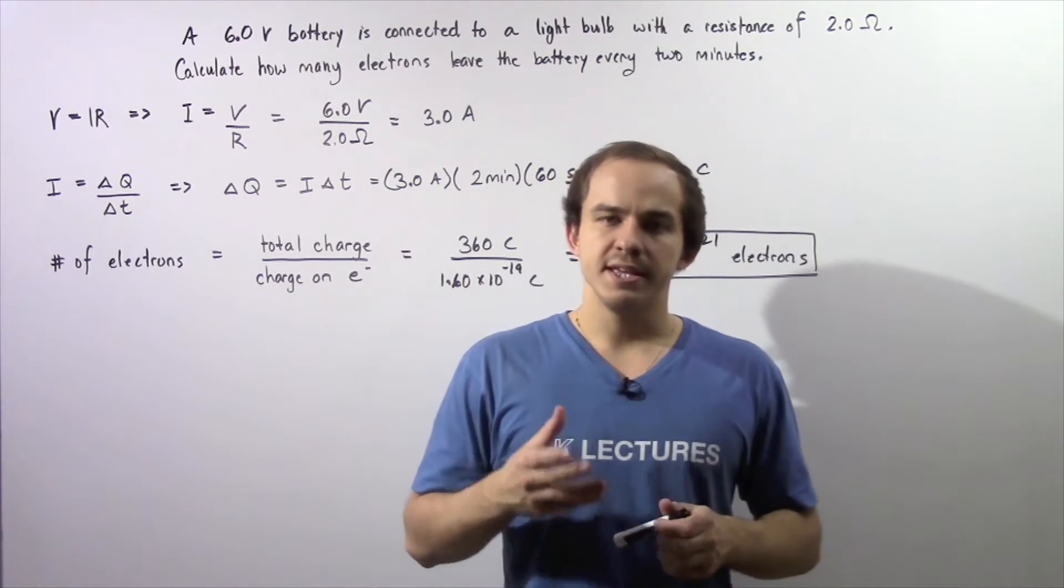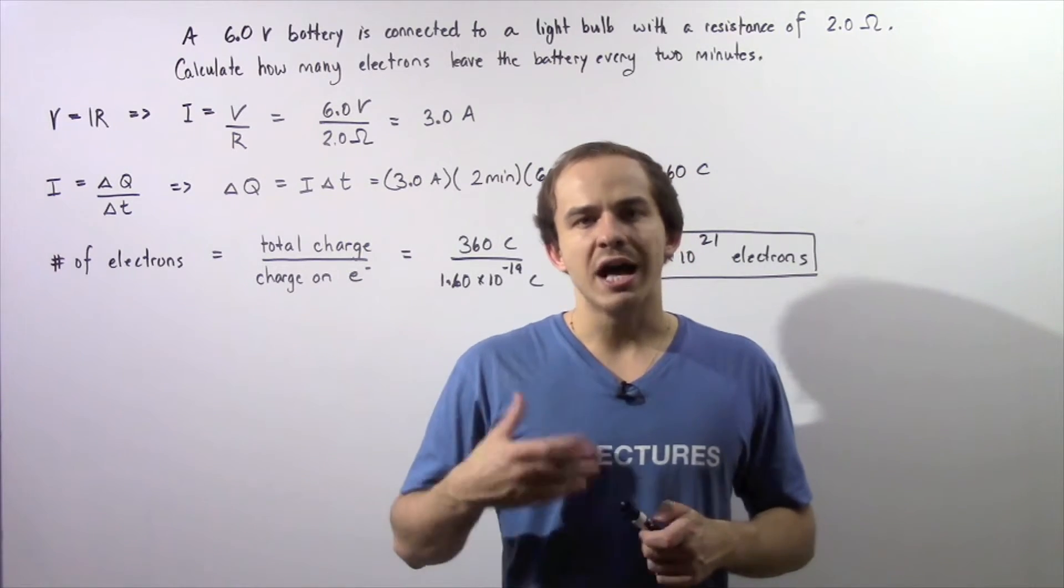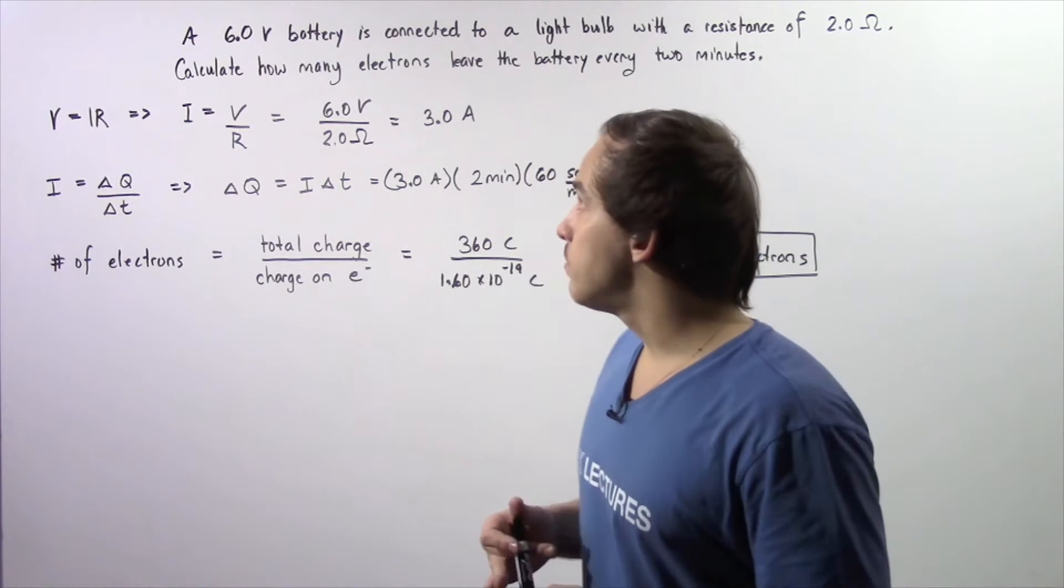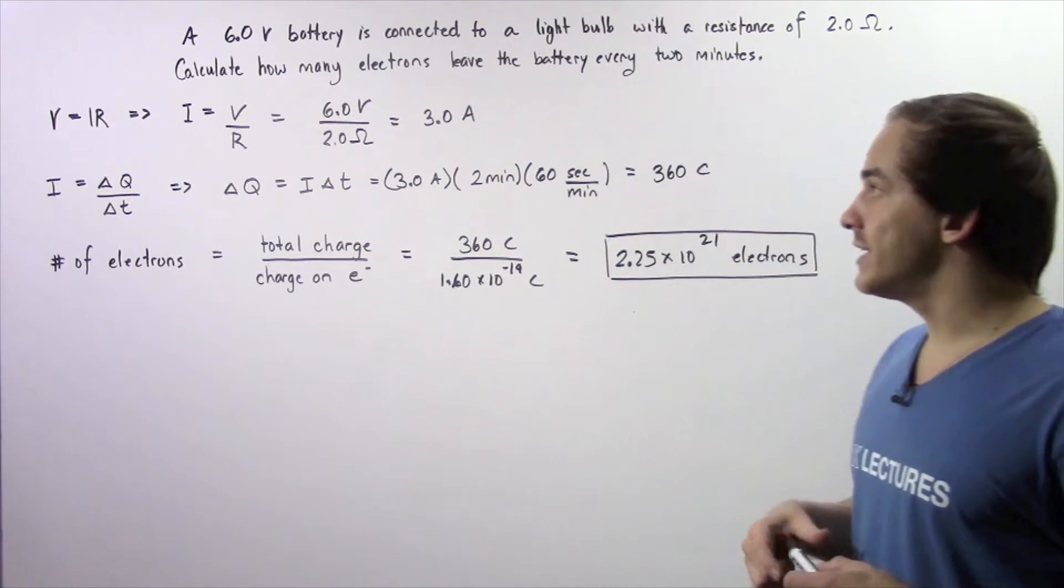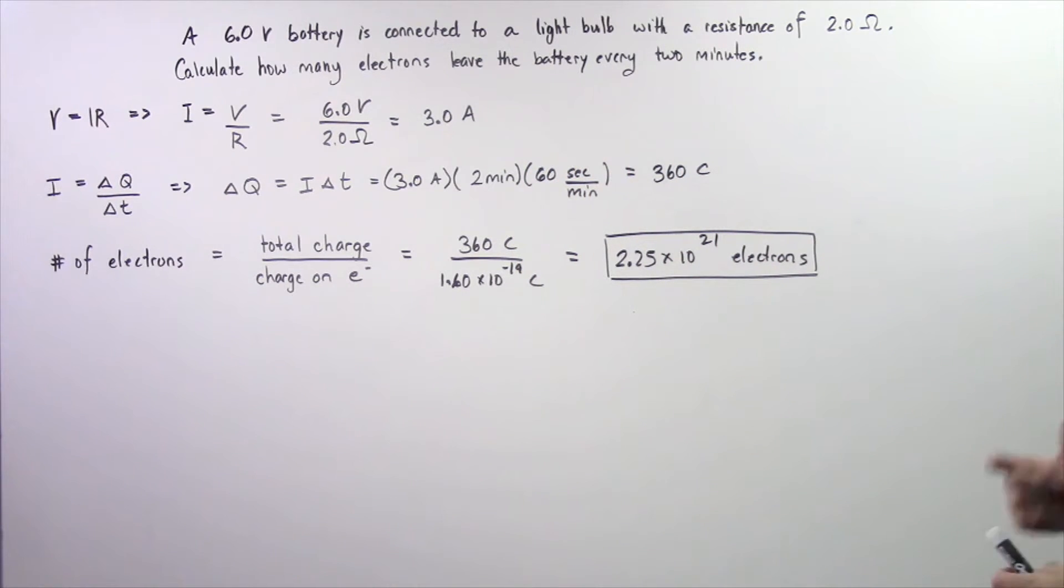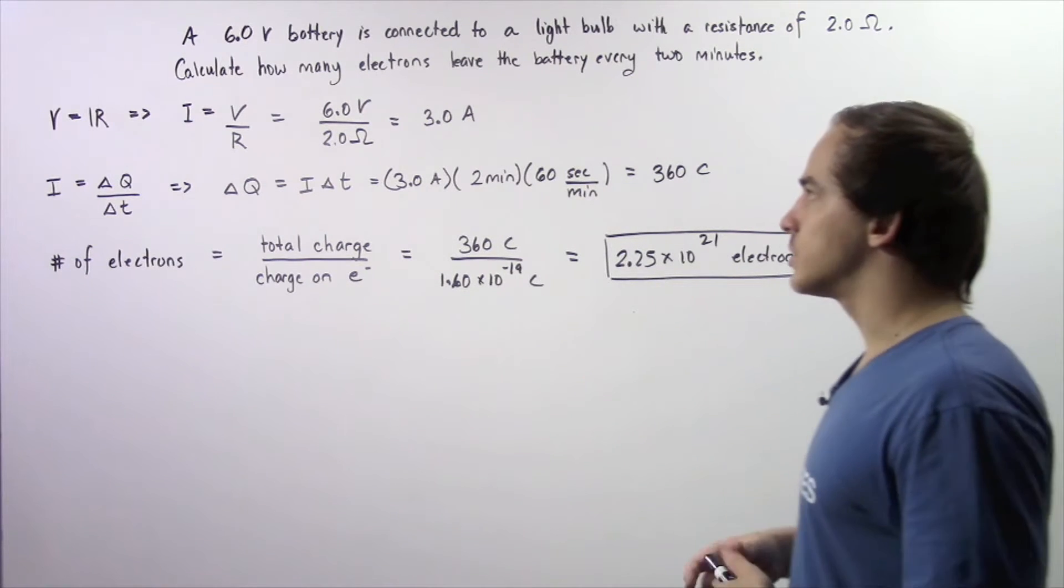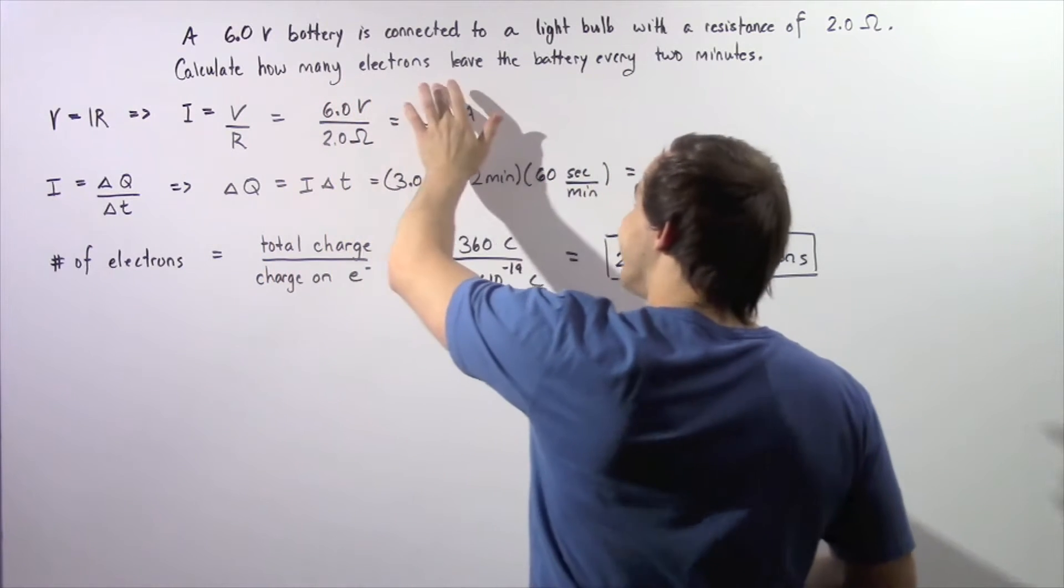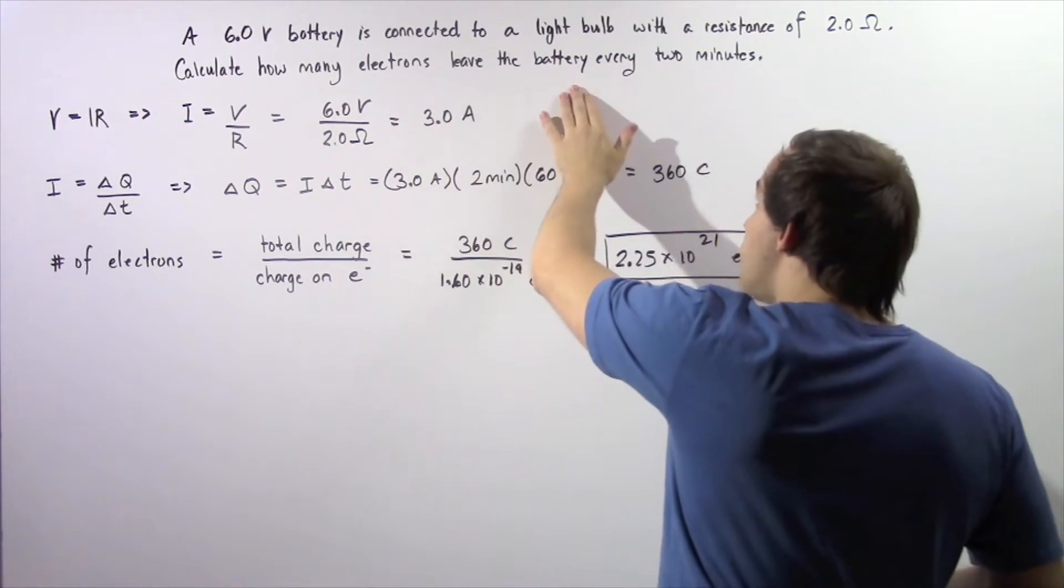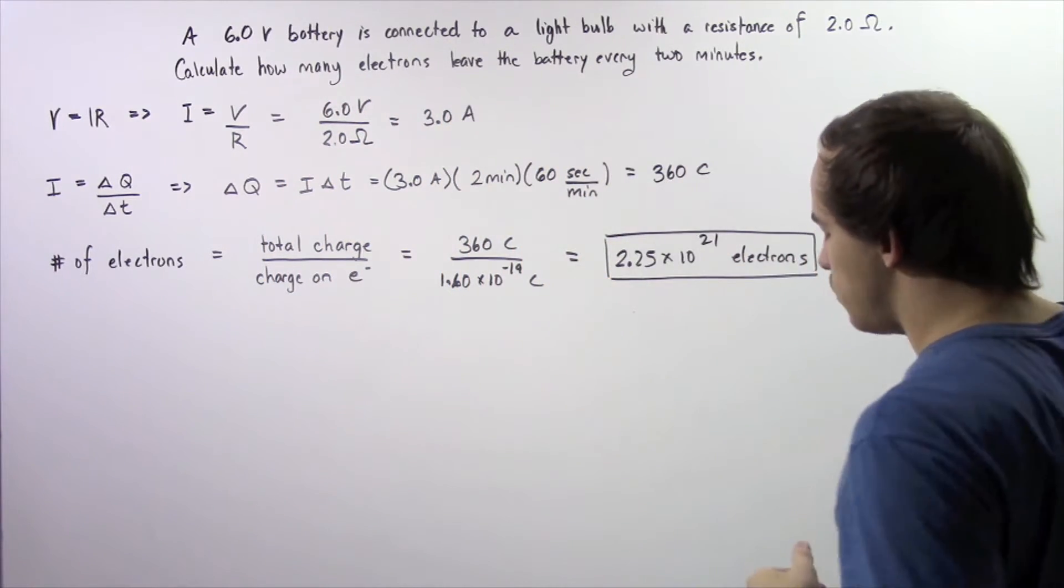Let's look at the following example in which we're going to apply Ohm's Law. Suppose a 6-volt battery is connected to a light bulb with a resistance of 2 ohms within a closed electric circuit.